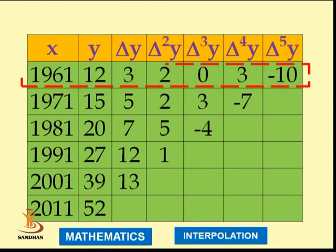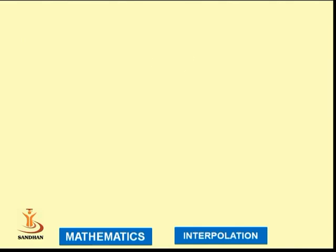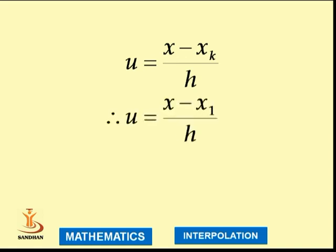Since k = 1, we use the first row of values: for Δy, 3; second order, 2; third order, 0; fourth order, 3; and fifth order, -10. Let us first compute u, where u = (x - x₁)/h, which equals 0.4.